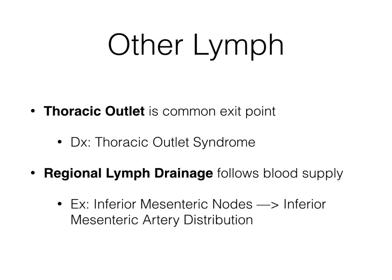The other important point is that the thoracic outlet is the common exit point for all lymph drainage in the body. This is high yield because in thoracic outlet syndrome, if you obstruct the thoracic outlet — found near the first rib on the upper left side of the thorax — you'll see classic symptoms of lymph congestion, fluid overload, and inability to maintain fluid homeostasis. This diagnosis appears on both Comlex and USMLE.